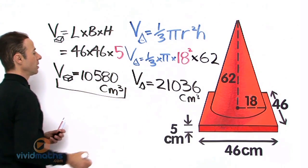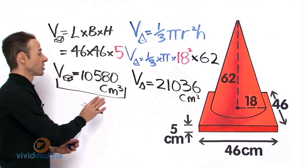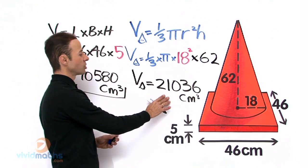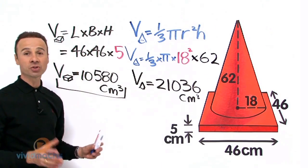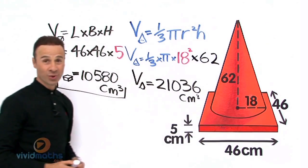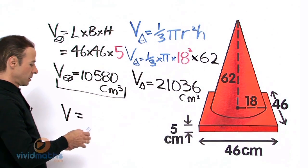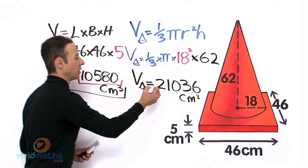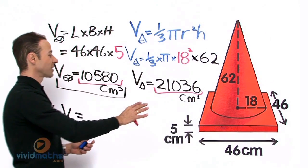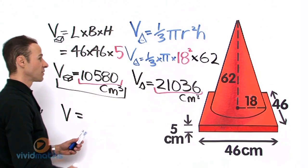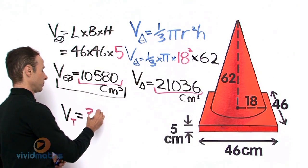The bottom part — that rectangular prism — is 10,580 centimeters cubed to the nearest centimeter cubed. Both values are rounded. Now all we have to do is combine the two, because this is a composite shape and we are looking for the complete total volume of this witch hat. So let us add them: 10,580 plus 21,036. All together to the nearest centimeter cubed gives us a grand total — the entire complete volume for this witch hat.